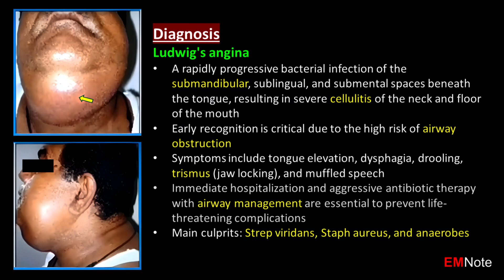Ludwig's angina is a rapidly progressive bacterial infection of the submandibular, sublingual, and submental spaces beneath the tongue, resulting in severe cellulitis of the neck and floor of the mouth. Early recognition is critical due to the high risk of airway obstruction.